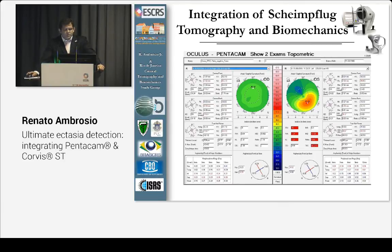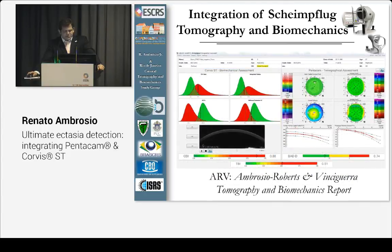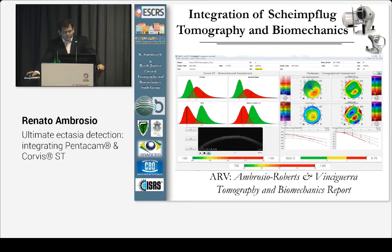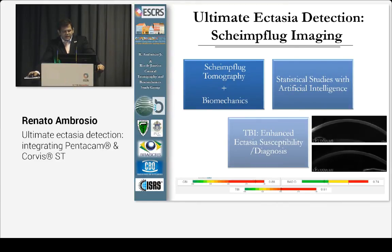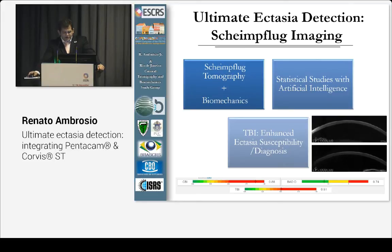Here is an example: a very normal right eye and an abnormal left eye. All the topometric indices are still white on that side, and yet on the curves, the cornea deforms more, giving a very abnormal CBI. Despite a D of 0.74, you have a very susceptible cornea. In the fellow eye, the Scheimpflug camera makes it easy to see the early change even on the first measurement, just from the thickness profile — and this is clearly a very abnormal cornea. Ultimate screening means combining Scheimpflug tomography and biomechanics, using statistical and AI methods to handle the complexity of the data. The TBI is how we assess ectasia susceptibility for diagnosis.